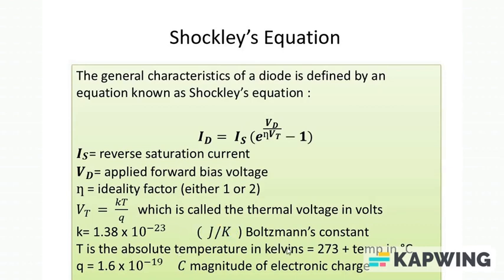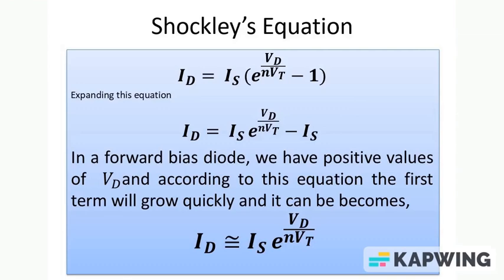T is the absolute temperature in kelvins, 273 plus the temperature. If we know the temperature, then this constant value of Vt can be calculated. And q is the charge of electron, magnitude of electronic charge. This is the equation through which we can calculate the current Id. Now let's expand this Shockley's equation.